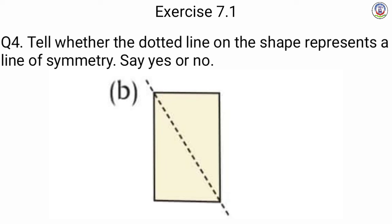Next is B — हम लोग को shape दिया गया है rectangle का. As we read in the introduction, rectangle only two lines of symmetry से cut होता है — that is horizontally and vertically. But here the line is slanting, so we will write here no, because rectangle slanting line से cut नहीं होता है.